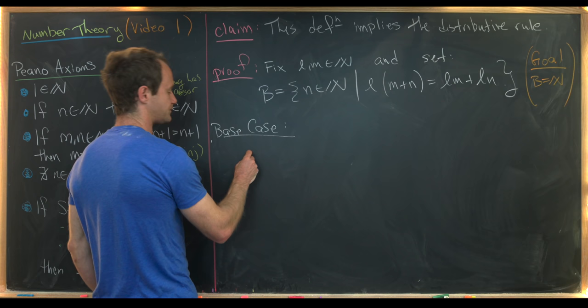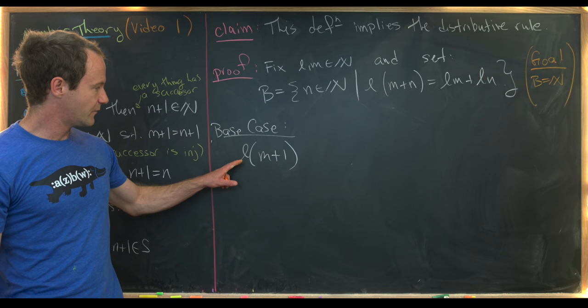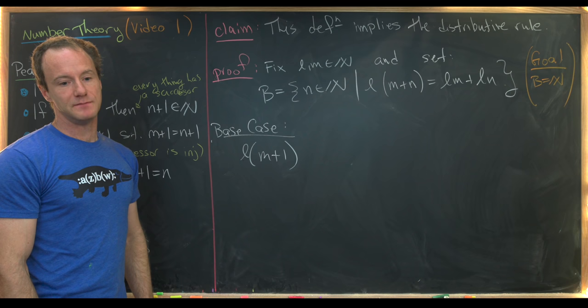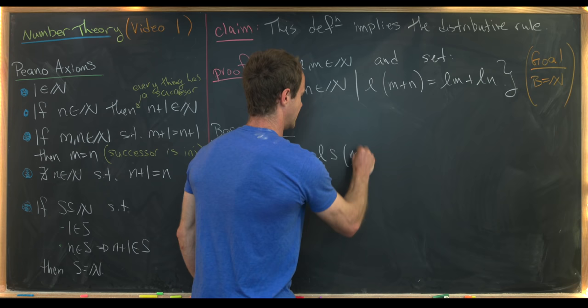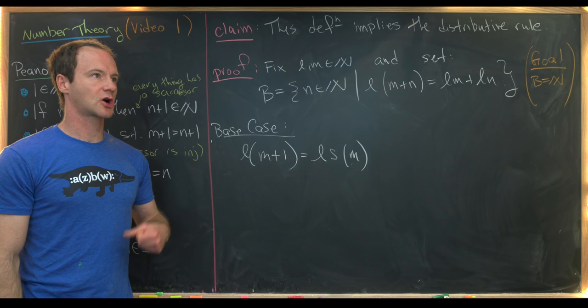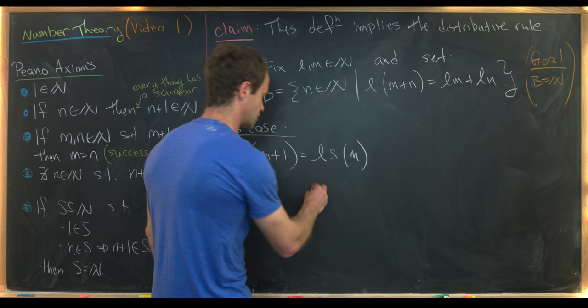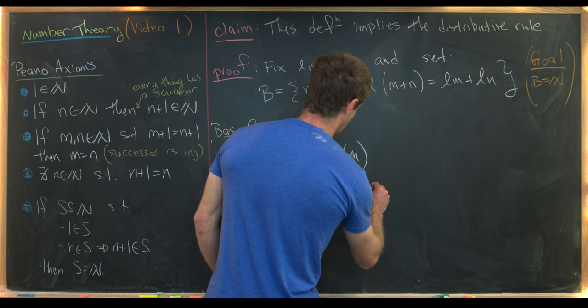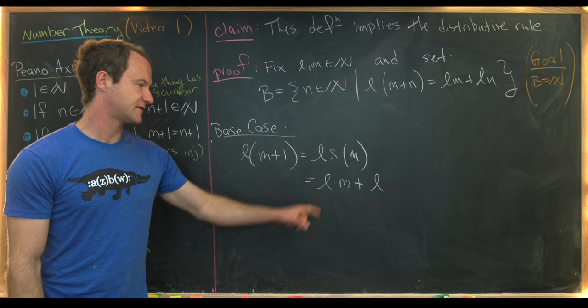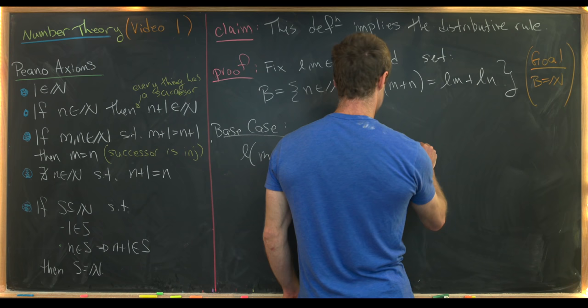For the base case, consider L times (M plus one). That equals L times the successor of M using the successor function. By the recursive definition of multiplication via the successor function, this equals L times M plus L. Looking at the leftmost and rightmost expressions, this immediately implies one is in B, so the base case is done.